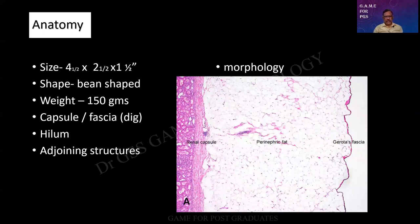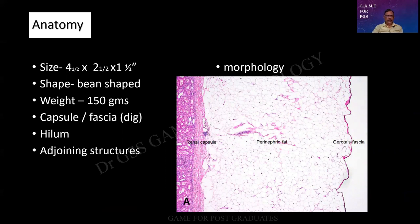This is what I had sent earlier. Size — four and a half into two and a half into one and a half inches. But if it is going to be centimeters, kindly measure. Shape is bean shape. And we should be a little careful whenever we use the word bean shape. Kidneys are bean shape, lymph nodes are bean shape, beans are kidney shape, ovaries are kidney shape. Any structure that has got a hilum will be bean shaped in outline for the entry and exit of structures. The weight is about 150 grams. There is a capsule and a fat sheath.